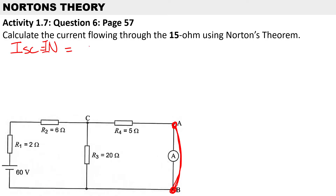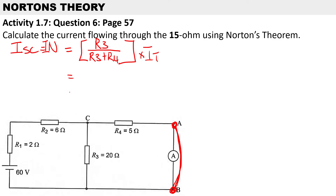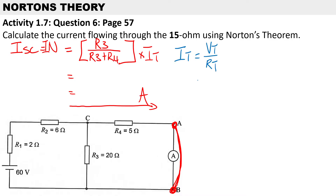To calculate the short-circuit current, we use R3 and R4 with the current divider rule: R3 over (R3 plus R4), multiplied by I_total. We still need to calculate the total current, so we use Ohm's law: I_total equals V_total over R_total. The total voltage is 60 volts, so now we need to calculate the total resistance.